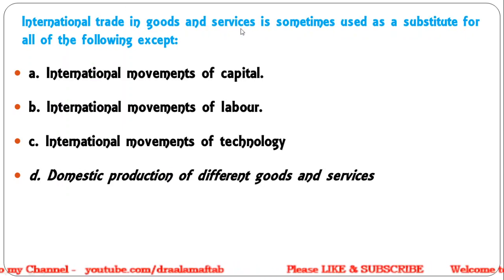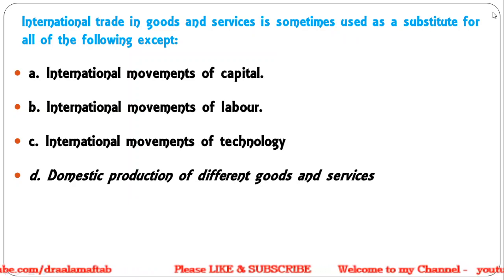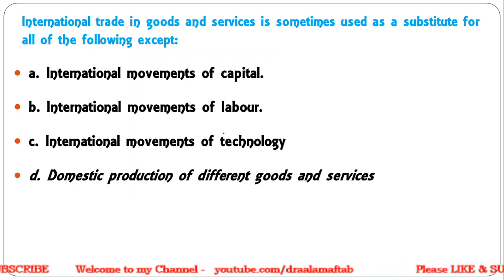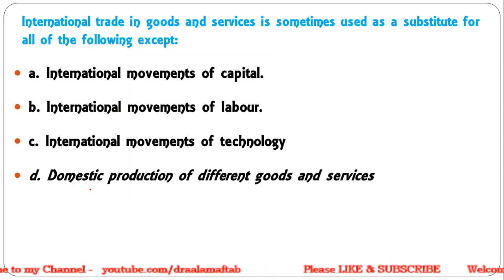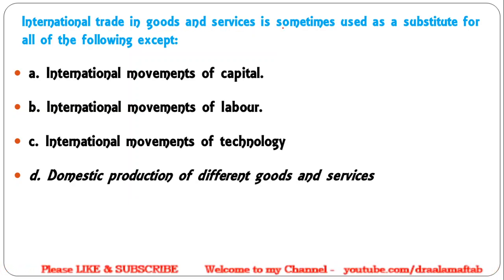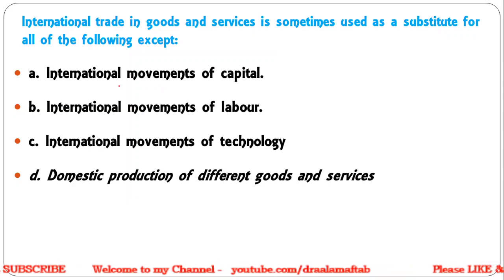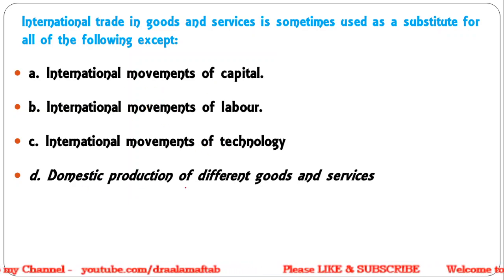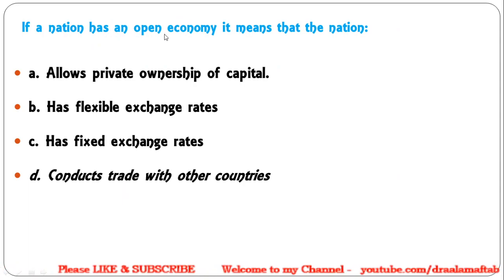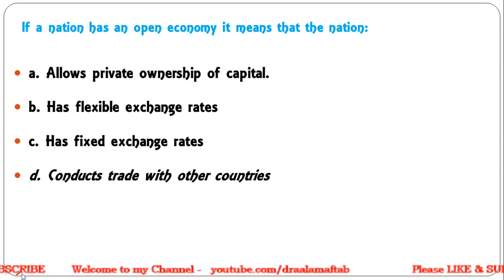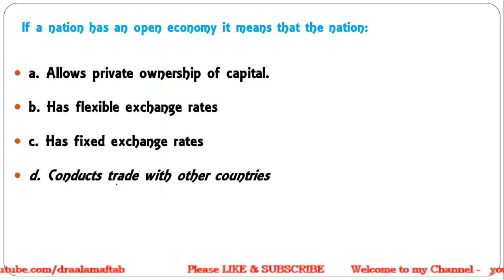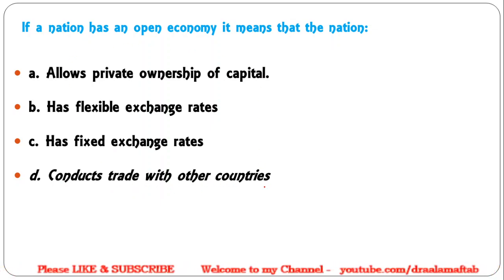Next: International trade in goods and services is sometimes used as a substitute for all of the following except domestic production of different goods and services, so the correct answer is D. If a nation has an open economy, it means the nation — allows private ownership of capital; has flexible exchange rates; has fixed exchange rates; conducts trade with other countries. Correct answer: an open economy means the nation conducts trade with other countries.